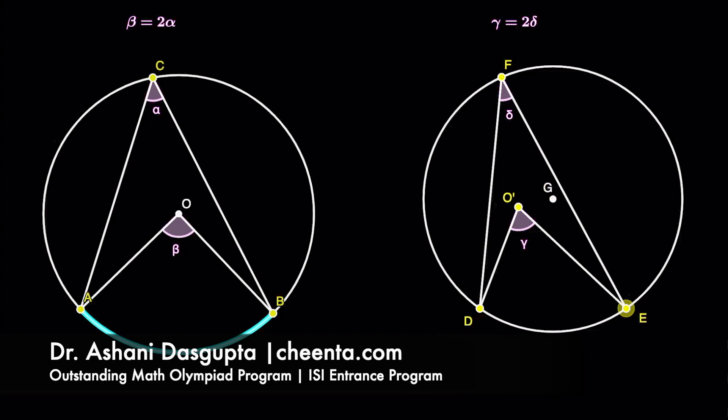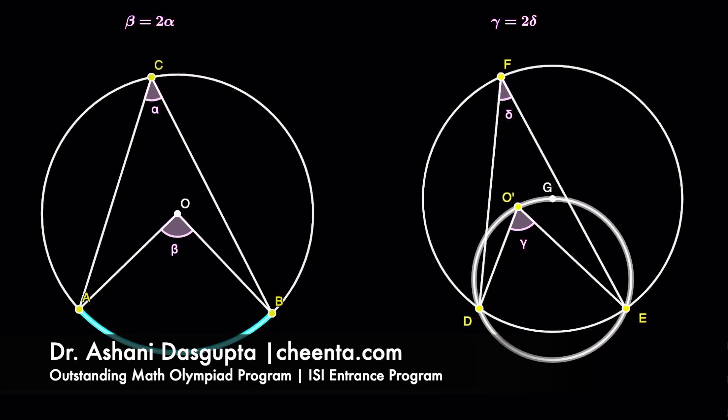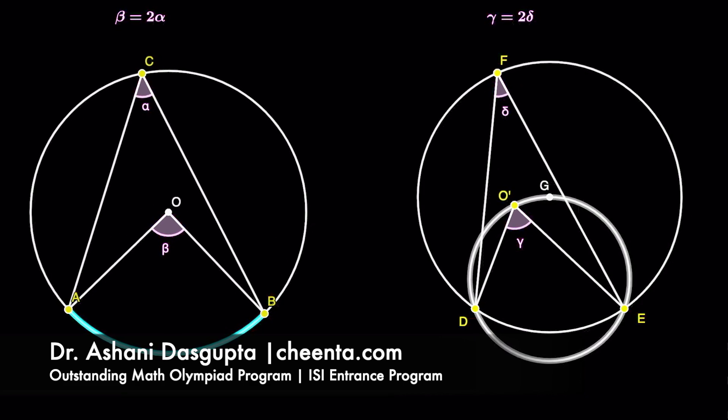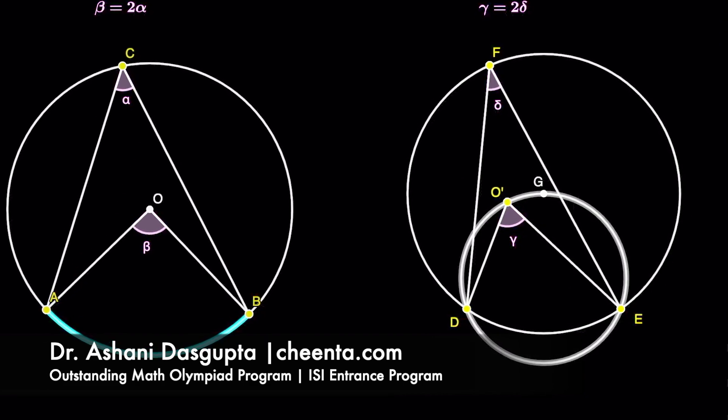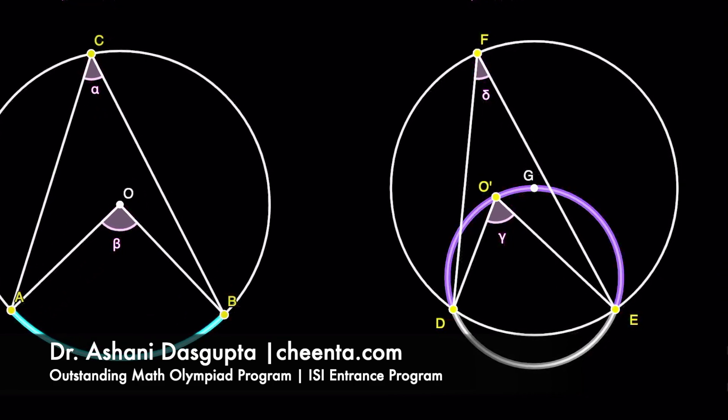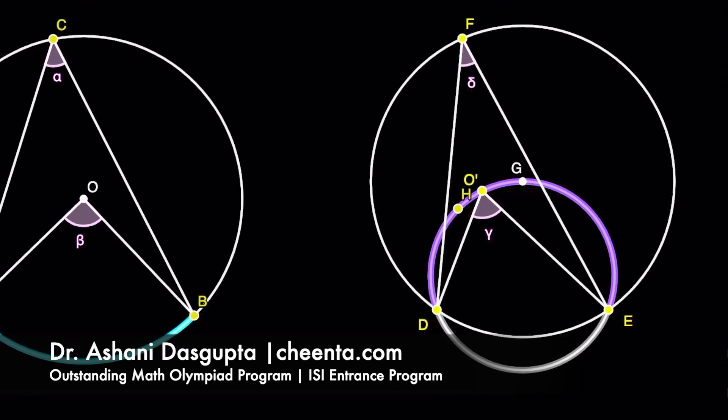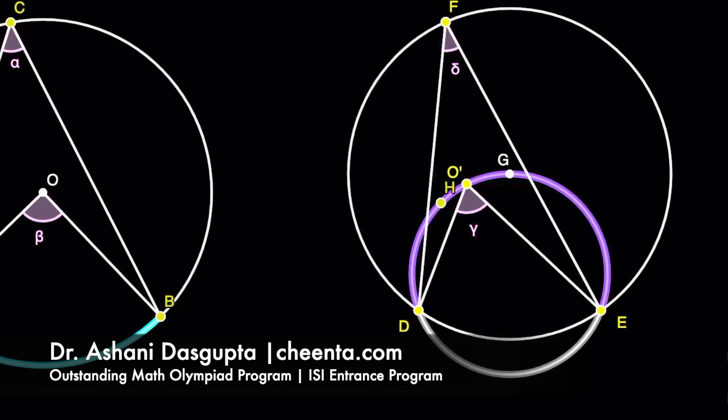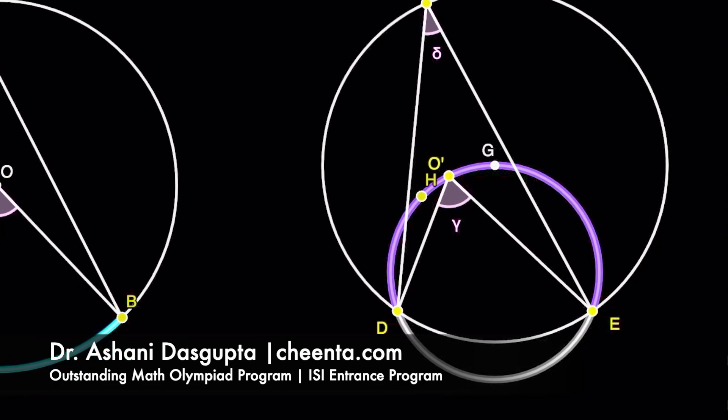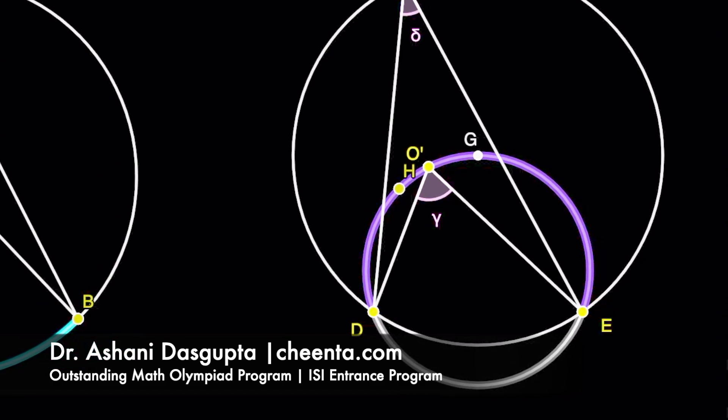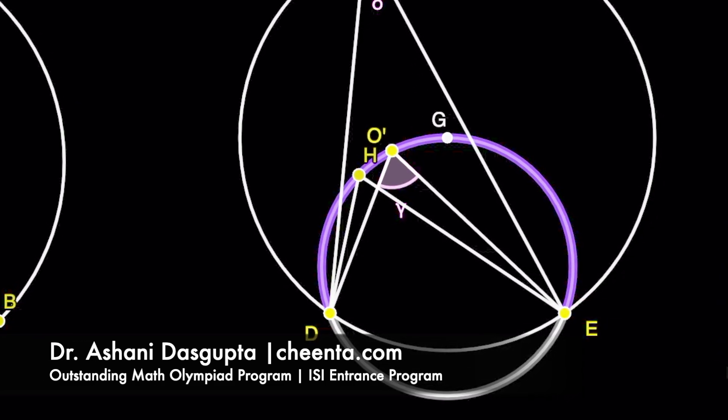In fact, you will see that if G is the center of this circle through D, F, E, let's take the circle through D, G, E. And you can show that any point H on this larger arc D, G, E of this circle will have that property.